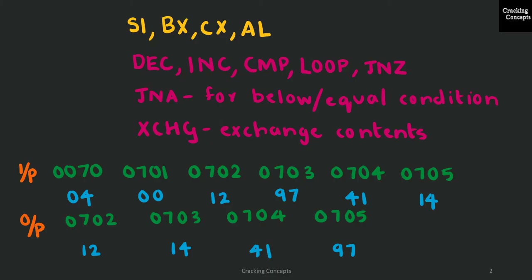The instructions I'll be using here are: DEC for decrementing the value of a register, INC for incrementing, and CMP for comparing the values of AL and the location pointed to by SI. LOOP is used for looping the set of instructions until the value of CX is 0. Whenever CX is a non-zero number, LOOP will transfer control of the program to the location specified as its address.